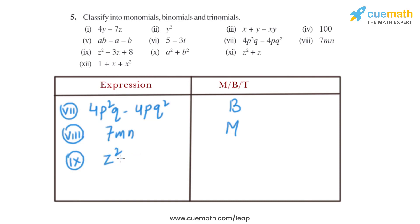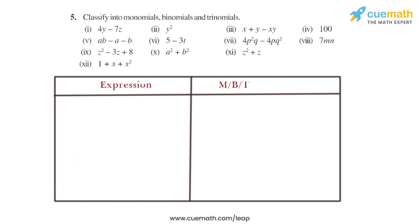In the ninth part, the expression given is z square minus 3z plus 8. As we can see, there are three different terms: z square, minus 3z, and plus 8, so that is a trinomial. The tenth expression is a square plus b square. There are two different terms, a square and b square, so it is basically a binomial.